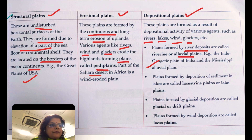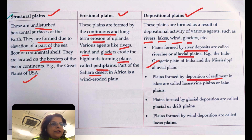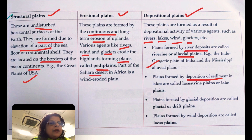When rivers bring a lot of sediment and it is deposited close to the delta region, plains are formed. These are the river depositional plains — the most common type of depositional plain.